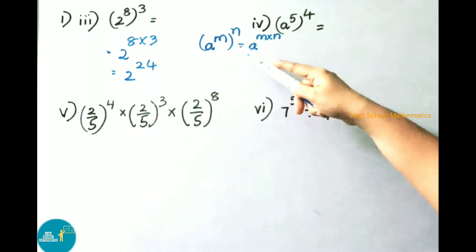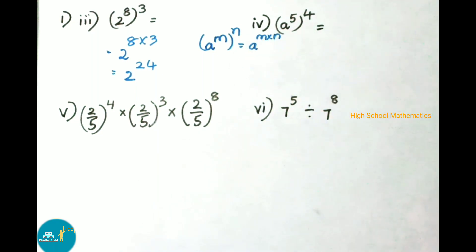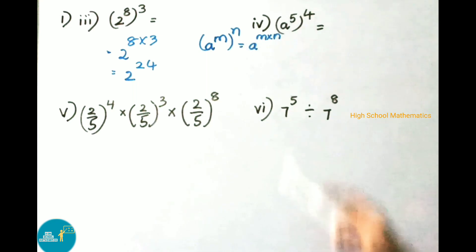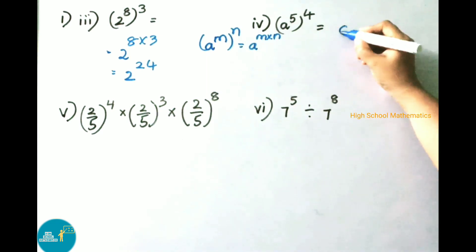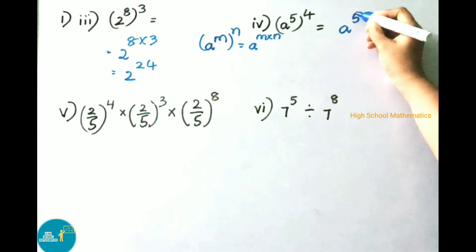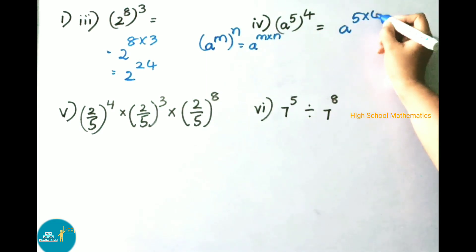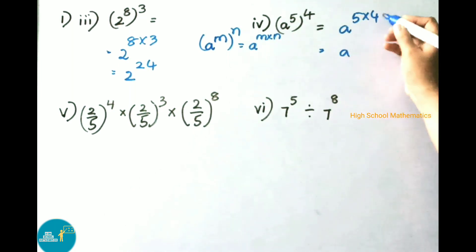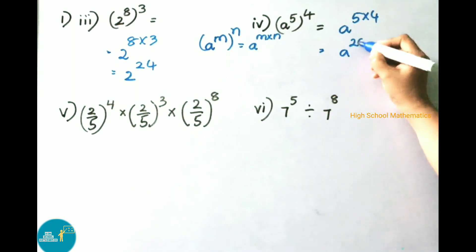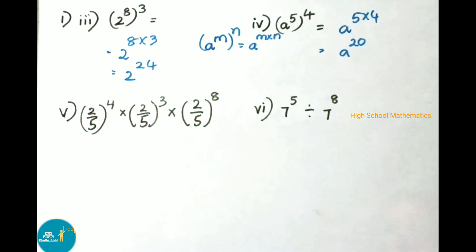Next one: a power 5 whole power 4. It is looking like the formula a power m whole power n, so it can be written as a power m into n. Write down a power 5 into 4, that equals to a power 20. So the answer is a power 20.